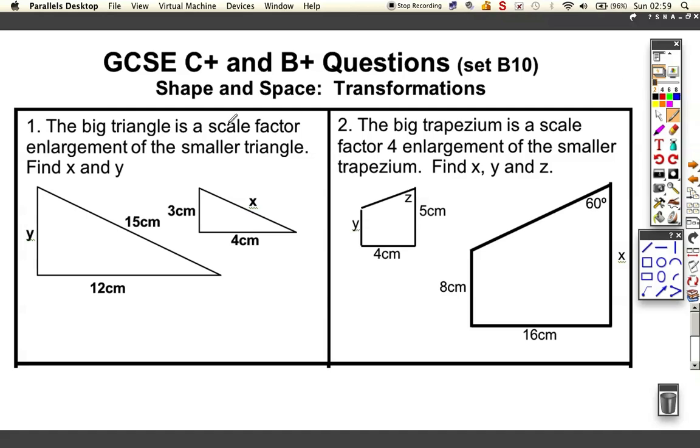So the big triangle is a scale factor enlargement of the smaller triangle, find x and y. You can see if you compare the like sides, the base side goes from four centimeters to twelve centimeters. So it's obviously got three times bigger. That means that y is also going to get three times bigger. So y is the scale factor of three times the height which is three, so y is going to come out as nine centimeters.